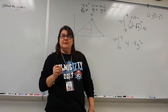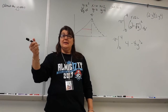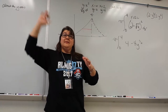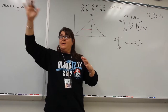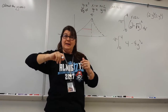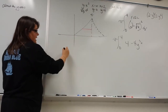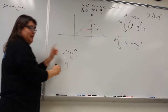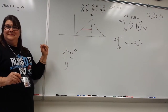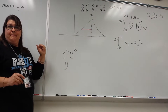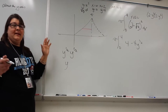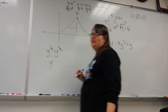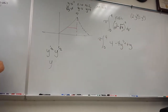And then last but not least, negative y to the one-half times negative y to the one-half — good thought process — it's just y. Can you tell me why? Because I'm squaring it, so it's one-half to the second. Power to power, I multiply. Y to the one-half times y to the one-half — keep the base, add your exponents — that's one. So we have plus y.